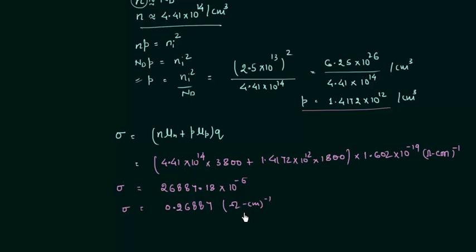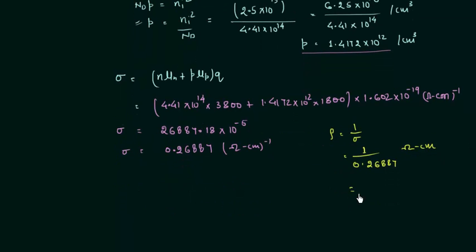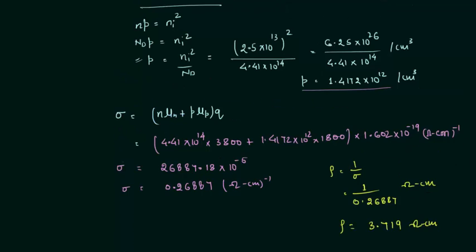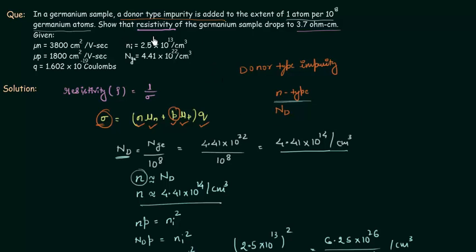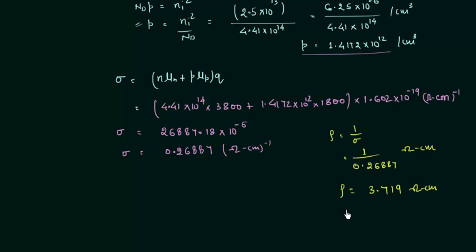Now we have the conductivity, so we can find resistivity. Rho equals 1 divided by sigma, so 1 divided by 0.26887, with units of ohm centimeter. Calculating this gives rho equal to 3.719 ohm centimeter. Reading the problem, we needed to find the resistivity and show that it should be 3.7 ohm centimeter, so we have calculated the correct value. This is all for this presentation. In the next presentation we will solve one more problem related to conductivity of semiconductors.